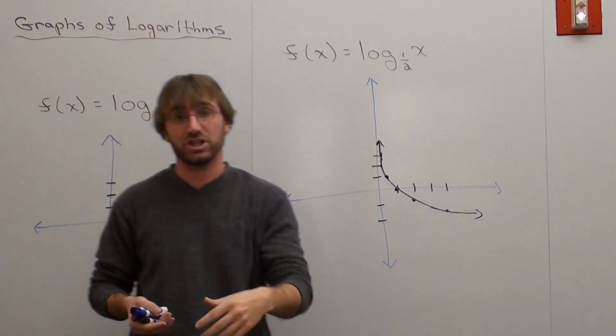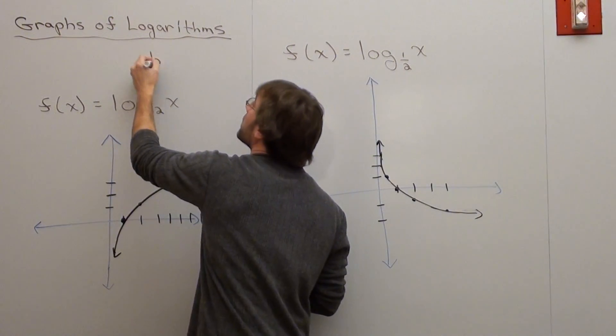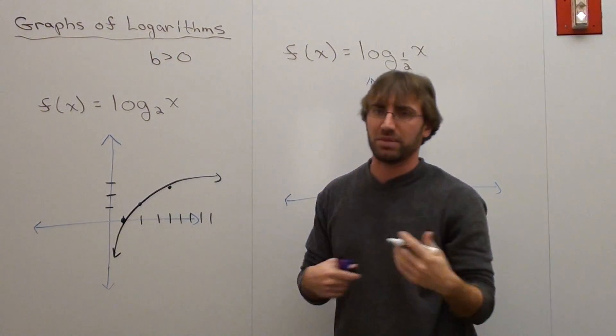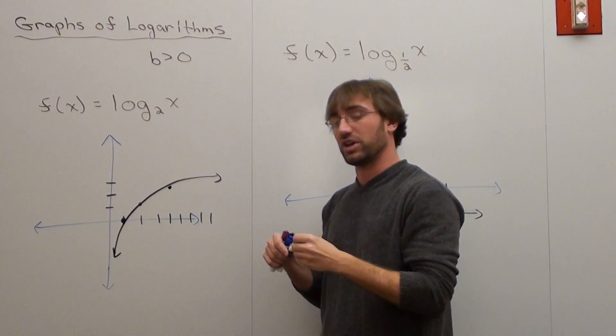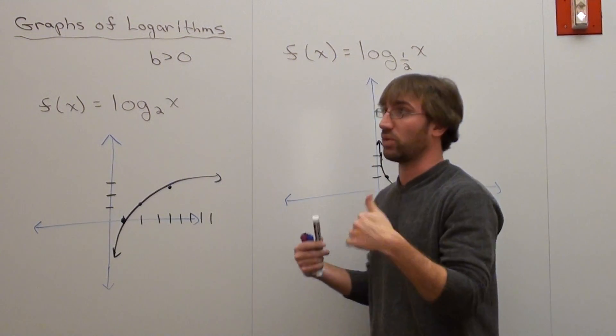Now there's a few stipulations when you're doing logarithmic graphs and one of them is that your base has to be greater than zero. It can't be a negative base. We're working with exponential functions where the base is positive so therefore we're not going to be working with negative ones.